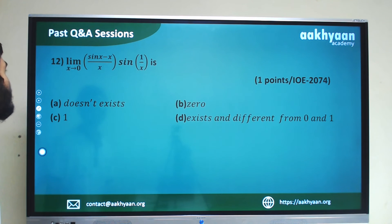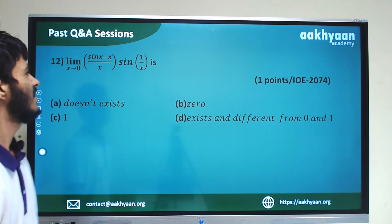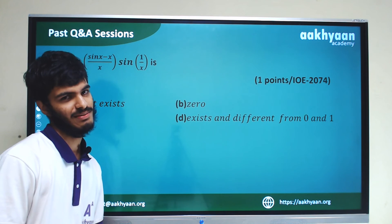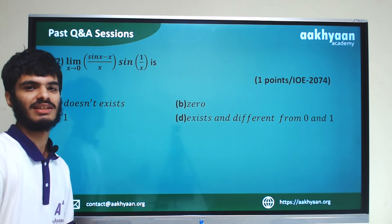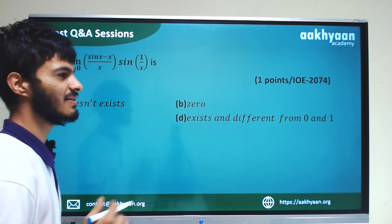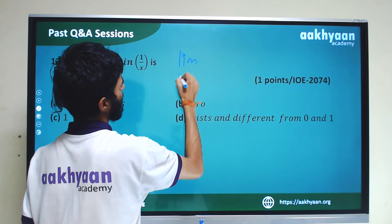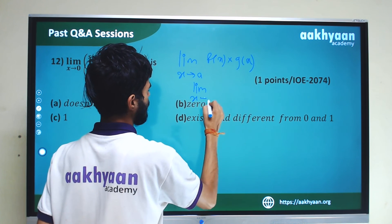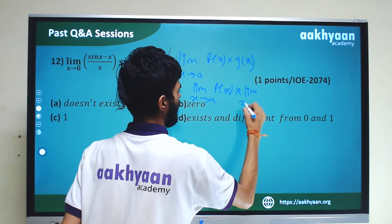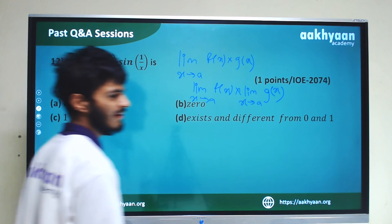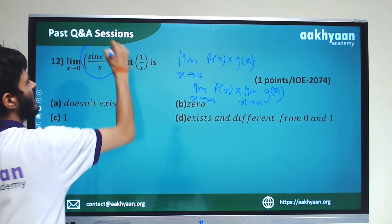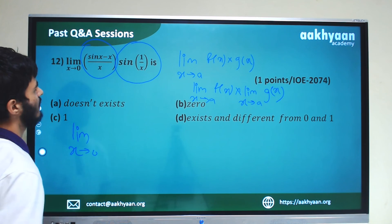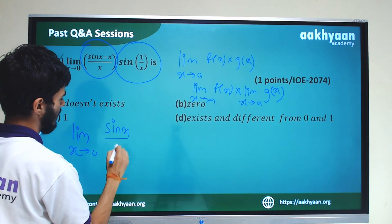In the next problem: limit x tends to 0 of (sin x minus x) by x times sin(1/x). We split this using the product rule for limits: limit x tends to a of f(x) times g(x) equals limit f(x) times limit g(x). So we write limit x tends to 0 of (sin x - x)/x times limit x tends to 0 of sin(1/x).